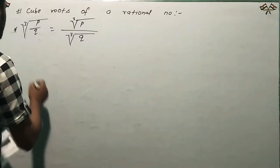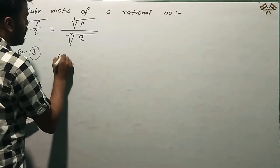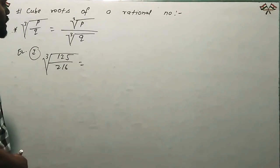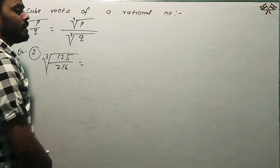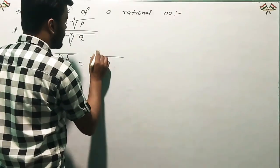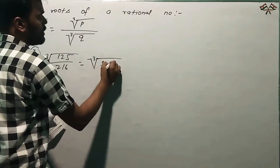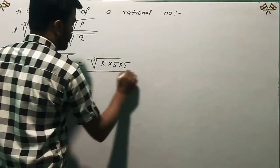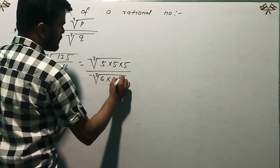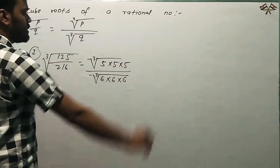Let's look at some examples. First, find the cube root of 125 by 216. To find the cube root, we first separate the numbers. We factorize 125, which is 5 into 5 into 5. And 216's factors are 6 into 6 into 6.